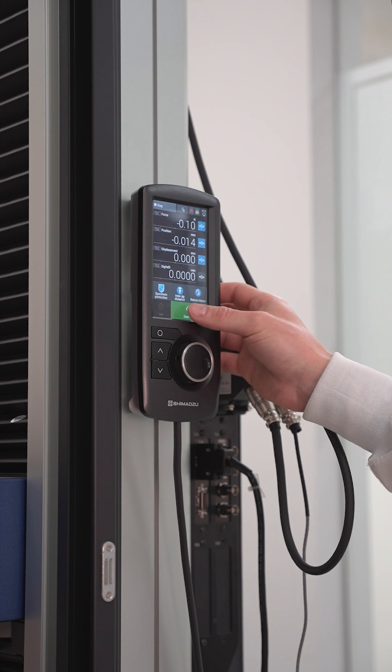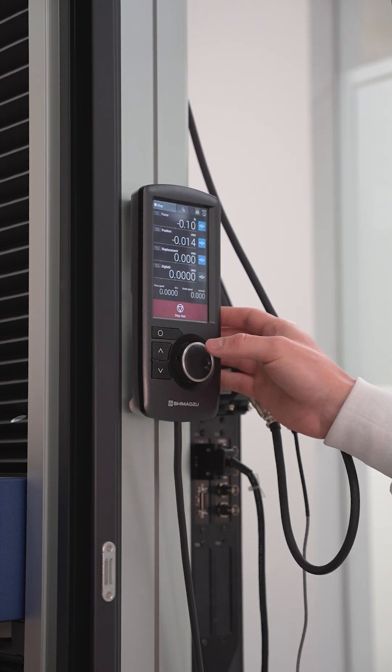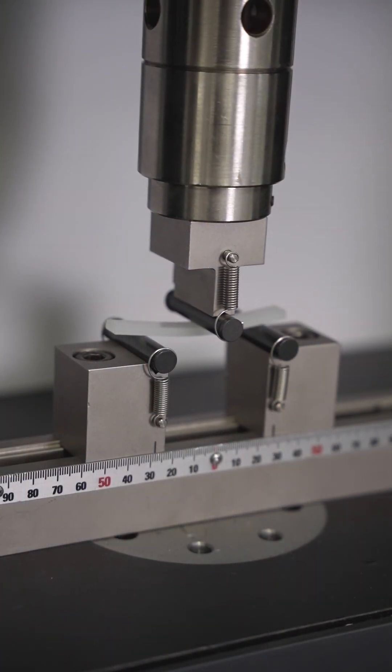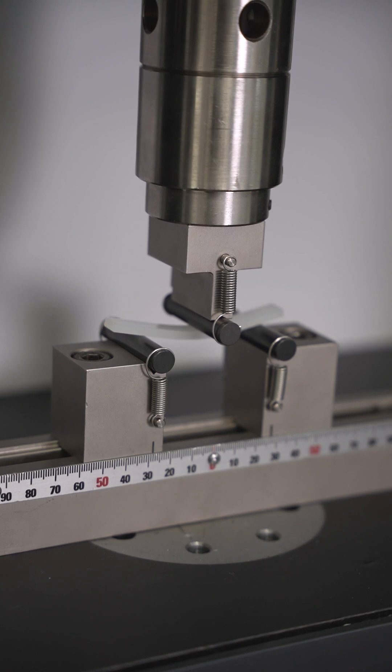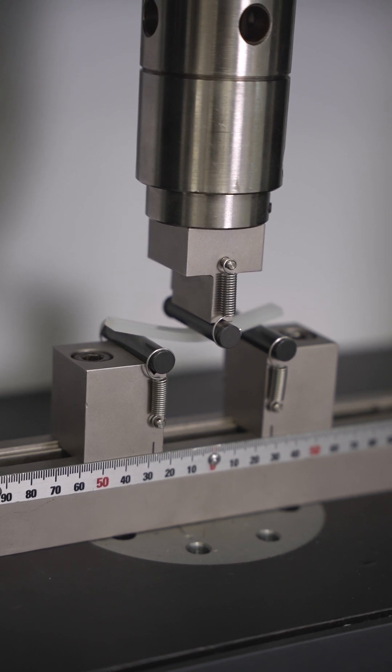There are two procedures. Procedure A is for modulus measurement and uses a test speed of 1% strain per minute. Procedure B is for high deformation tests and uses 10% strain per minute.